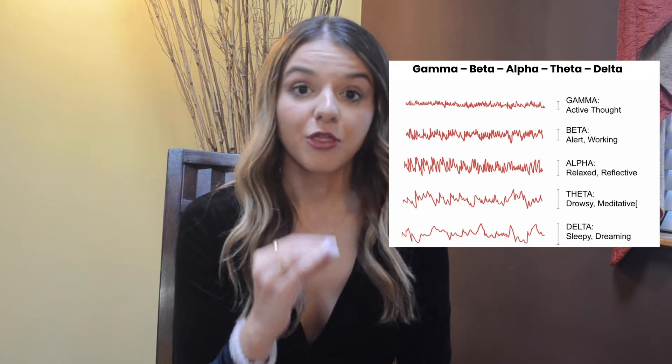Lastly is the gamma state. This is when we're in deep concentration, deep study, deep thought. The frequency is usually around 35 to 40 hertz — around 35 is the ballpark. Those are all five brainwave states.